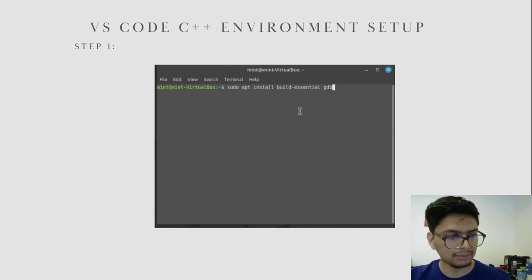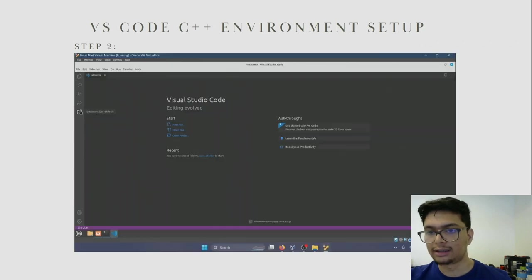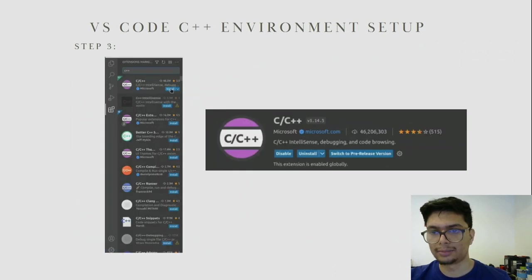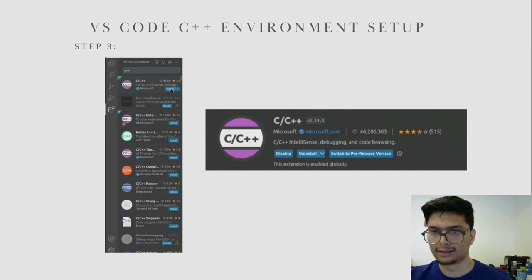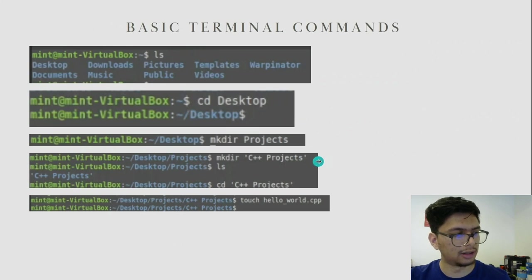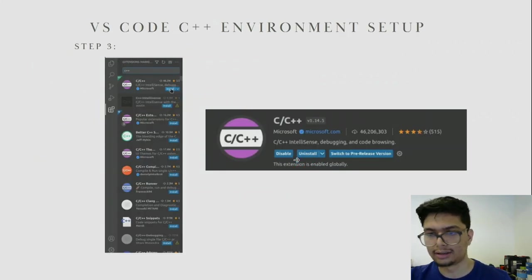Once you have done that, go back into VS Code and click on the Extensions icon on the left pane. Type C++ in the search bar and click Install on the first extension you see. Once it's installed, the icon will change from Install to Disable — that means you have successfully installed the extension.